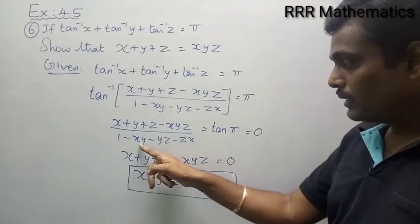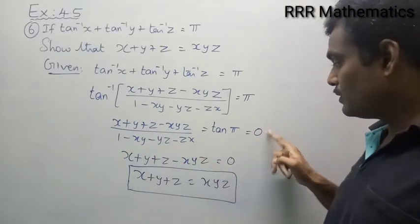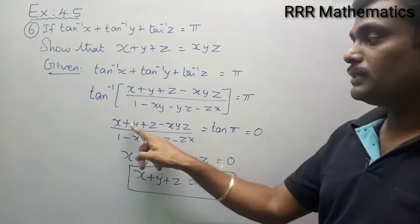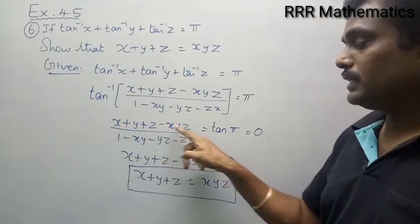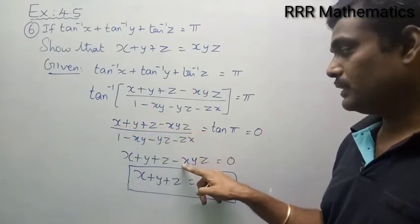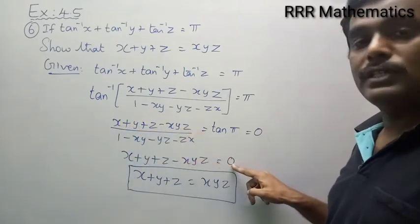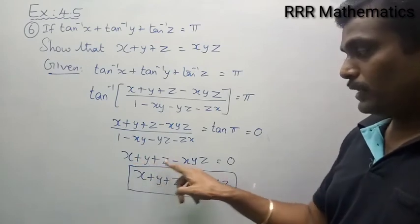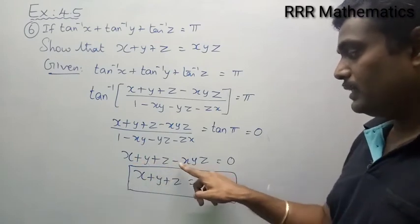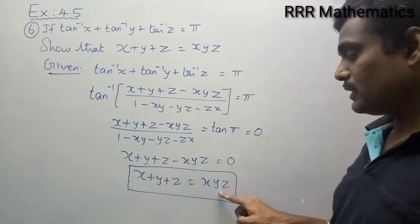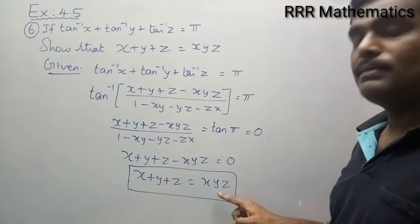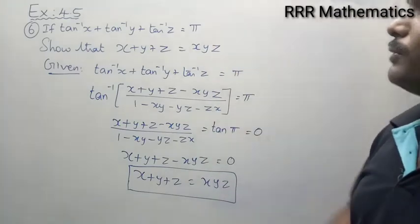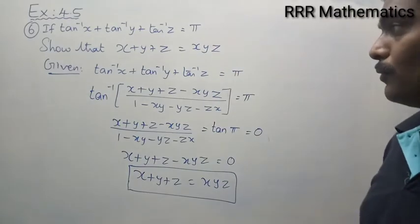So cross multiply — this into 0 equals 0. Therefore, x plus y plus z minus xyz equals 0. So x plus y plus z equals xyz, when the minus xyz comes to the right-hand side. This is the required proof.